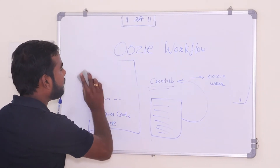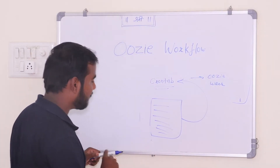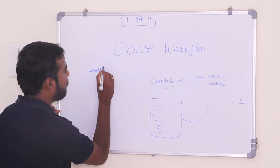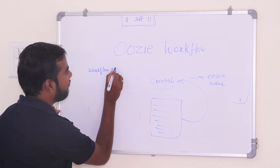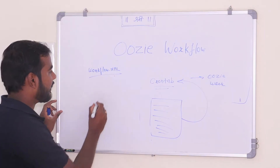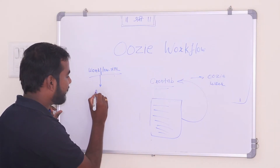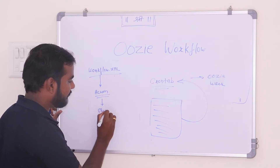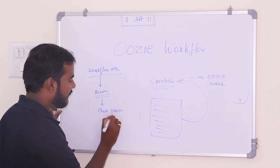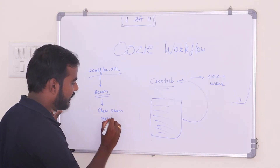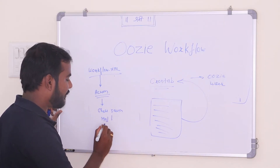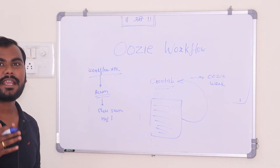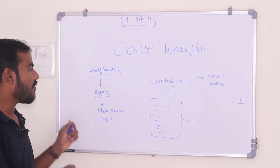Basically there is one XML file, we call it the workflow.xml file. This XML file contains different actions. Those actions can be your shell script, it can be your HQL script which is Hive code, or it can be your Java code also.